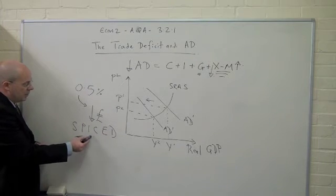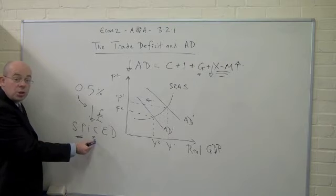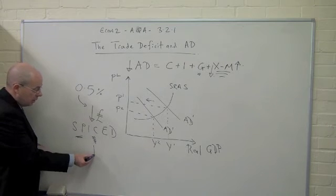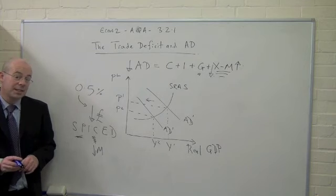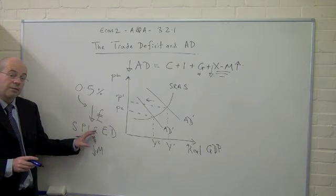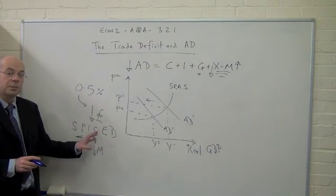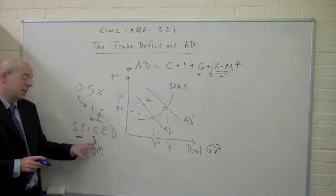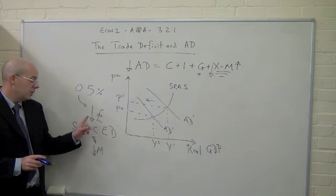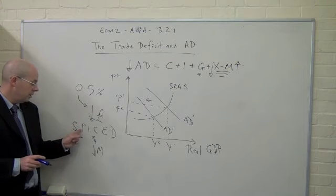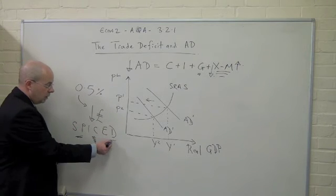Well here we've got a weaker pound, so the imports could be dearer. Assuming demand for our imports is price elastic, that means the overall value of imports decline. Less has been spent in total on our imports, so less money is leaking out in terms of imports.